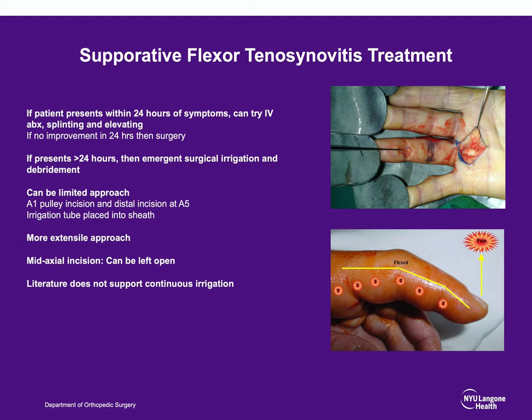The mid-palmar space is dorsal to the long flexor tendons of the middle, ring, and little fingers, and palmar to the interosseous muscles of the third, fourth, and fifth metacarpals. It is bordered radially by the mid-palmar septum going to the third metacarpal, and ulnarly by the septum going to the fifth metacarpal. Often you will lose the normal concavity of the palm, and the patient will have pain with palpation of the palm as well as with passive motion of the middle and ring fingers. Depicted below are various incisions that can be performed depending on the extent of the mid-palmar space infection.